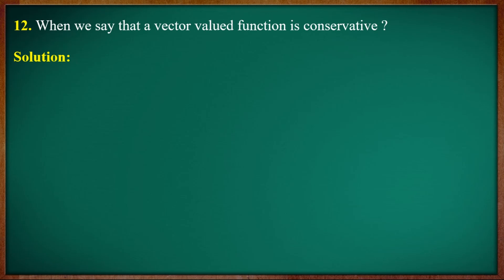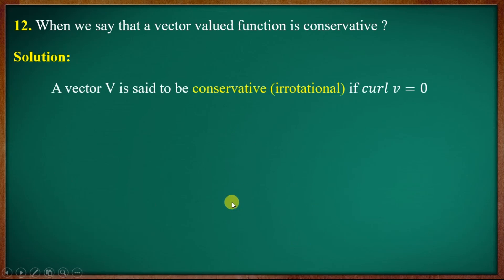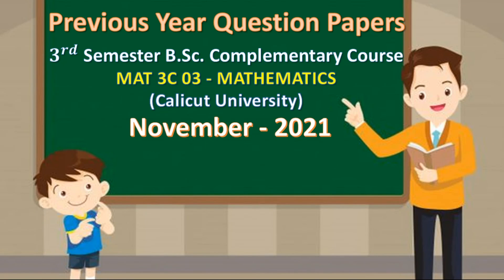When we say a vector-valued function is conservative, the condition is that curl V = ∇×V = 0, that is conservative. The curl V equal to zero confirms the vector field is conservative. This completes part A; we will discuss part B next.